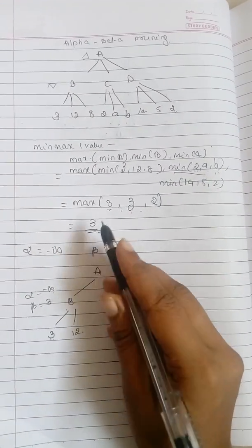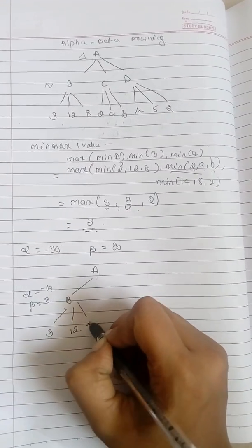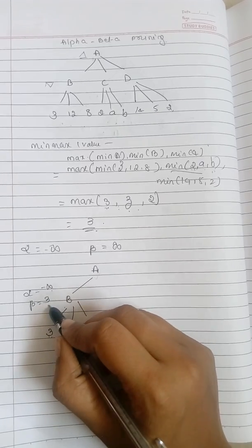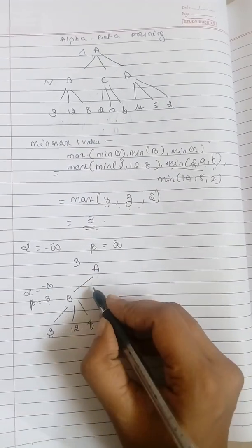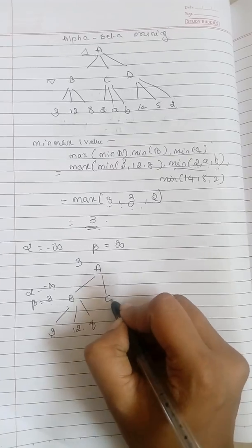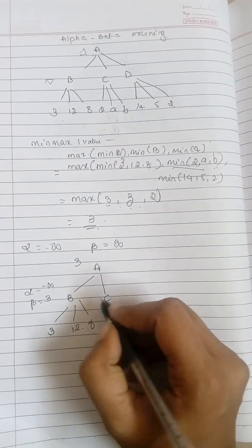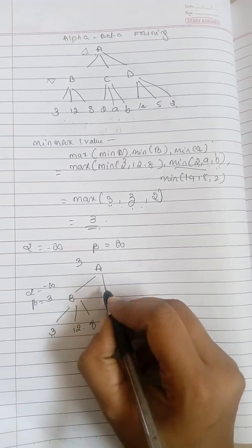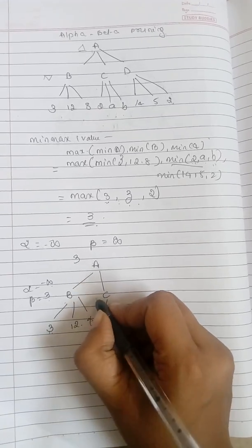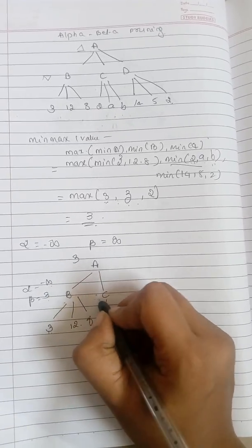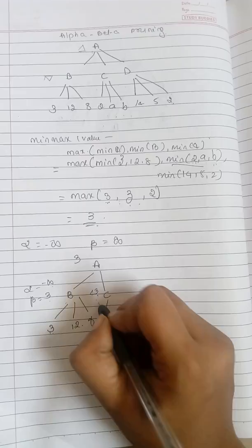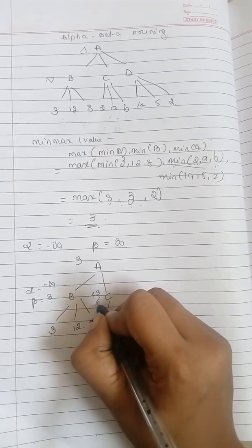So next node is 8. Again, 8 and 3 - the minimum is 3. So A will get the value of 3. Now next node will come as C, C to 2, and this will say I am having the value of 3, so less than or equal to 3. But now 2 is holding, then 2 will be there.